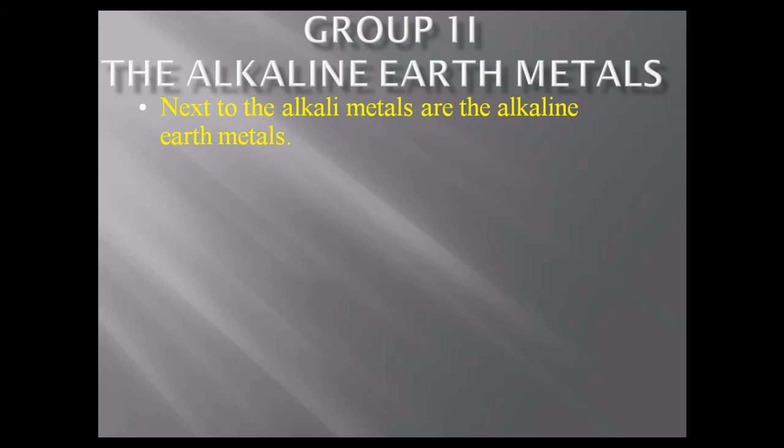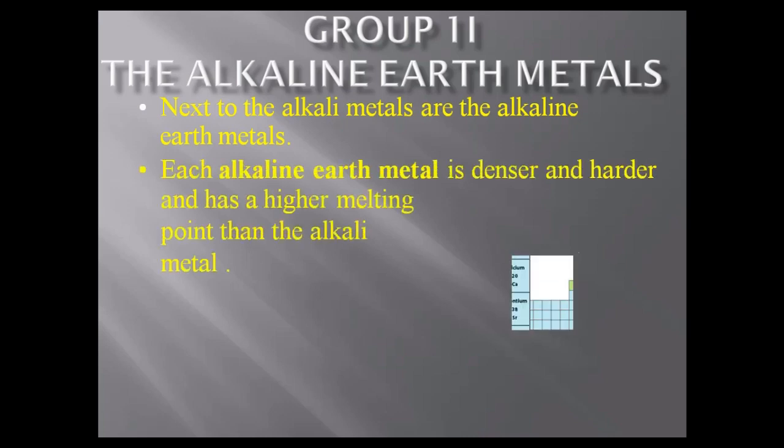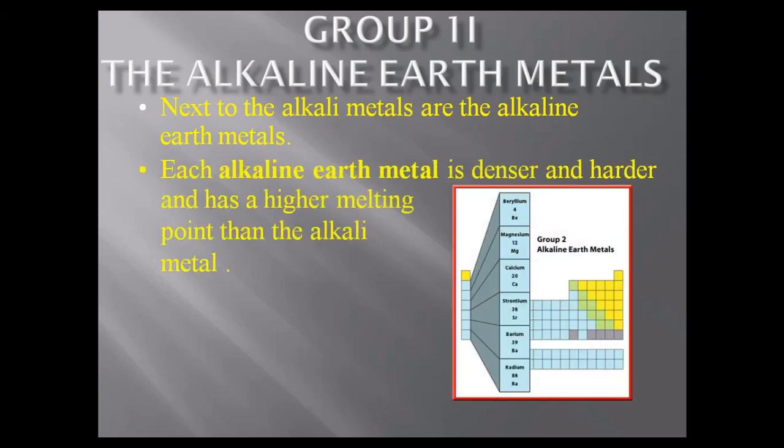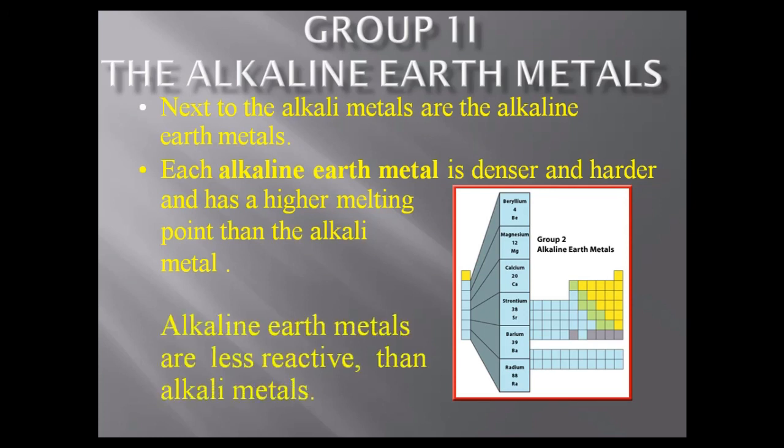Group 2, the alkaline earth metals, are next to the alkali metals. Each alkaline earth metal is denser and harder and has a higher melting point than the alkali metals. Alkaline earth metals are also less reactive than alkali metals.